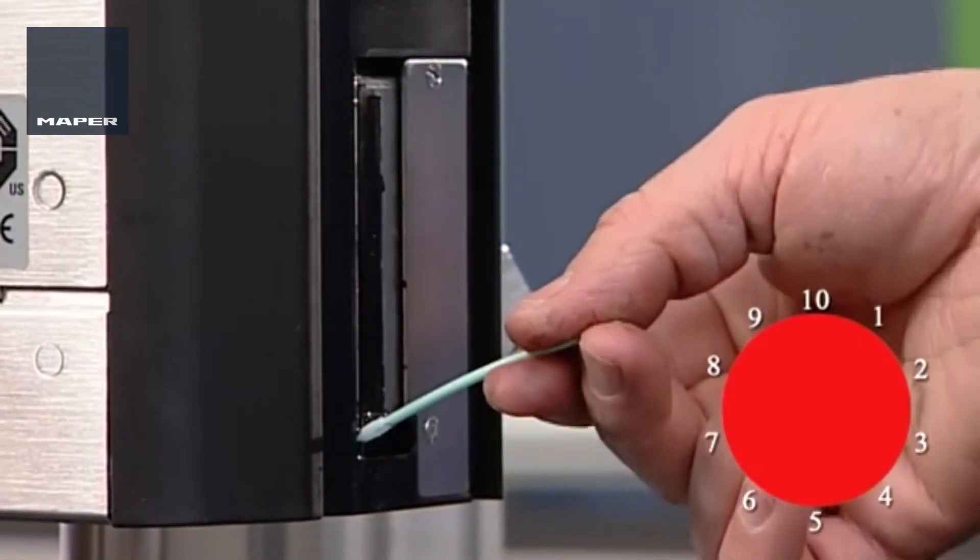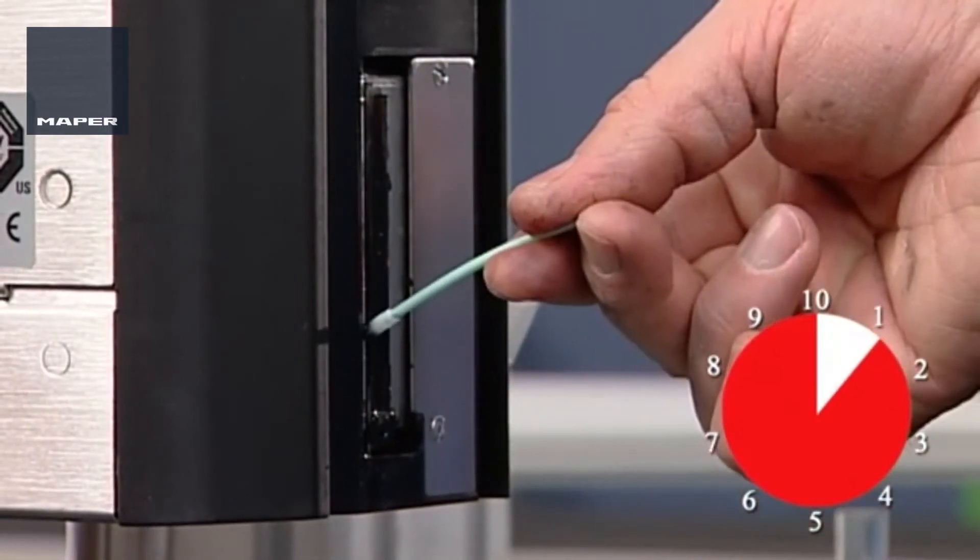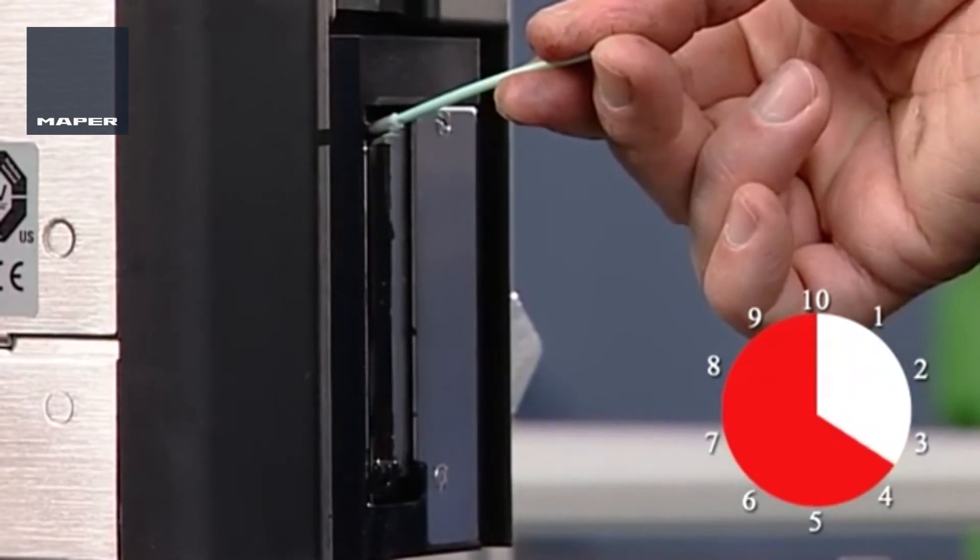Dust and ink may form a plug of debris blocking the channel down the side of the print head, causing the ink to flow across the cover.